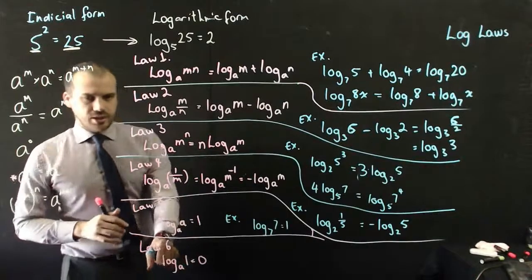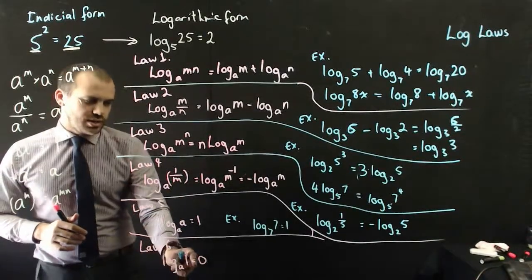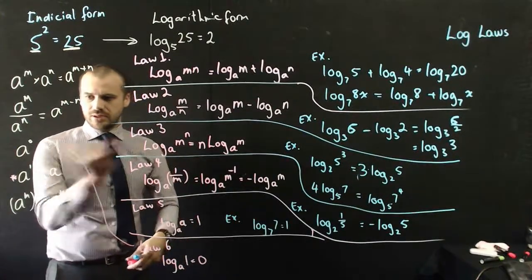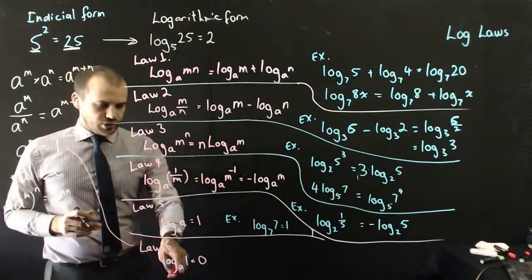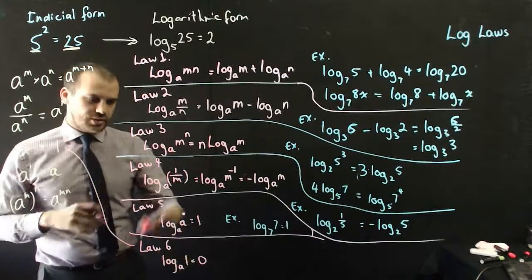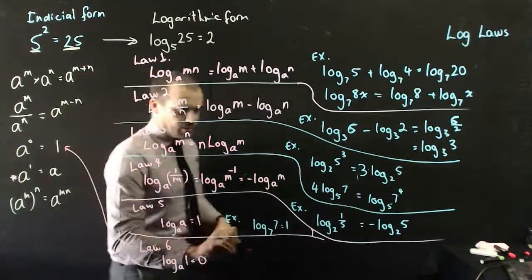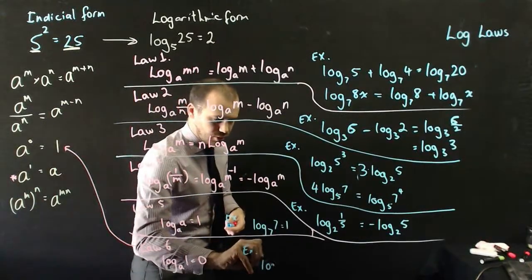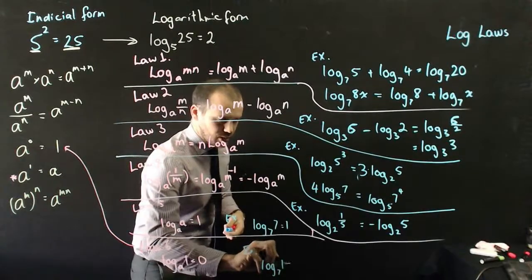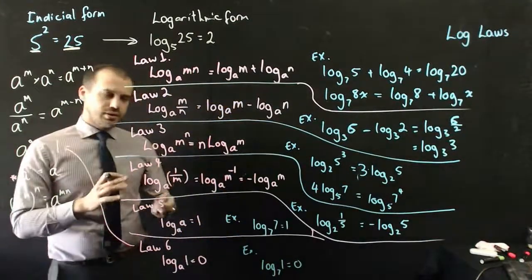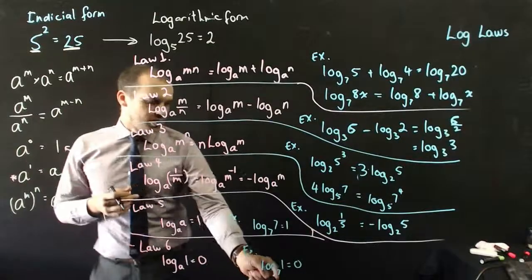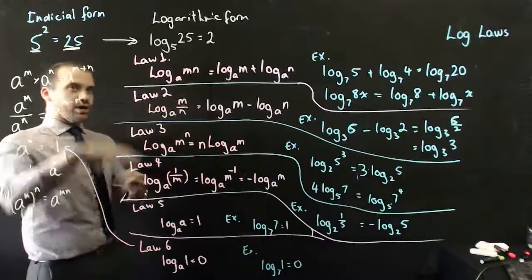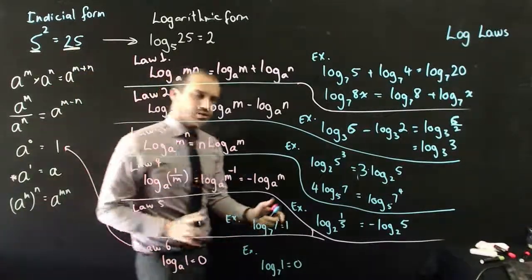Last log law — law 6: log base a of 1 equals 0. If you've ever got a 1 inside the log, the answer is going to be 0. For example, log base 7 of 1 equals 0. Written in indicial form it's obvious: 7 to the power of 0 equals 1. And those are all six of our log laws, done as quickly as we can.